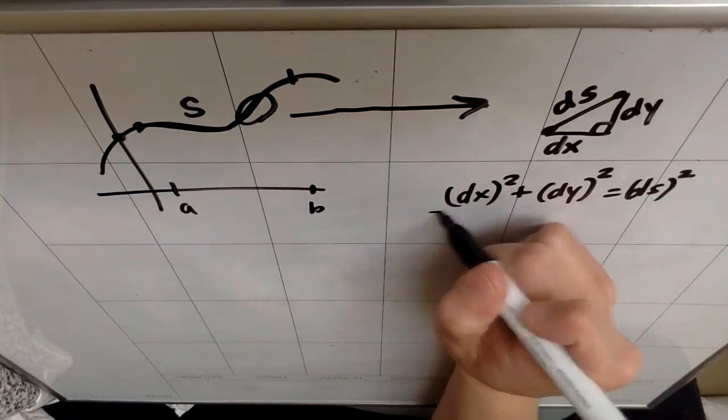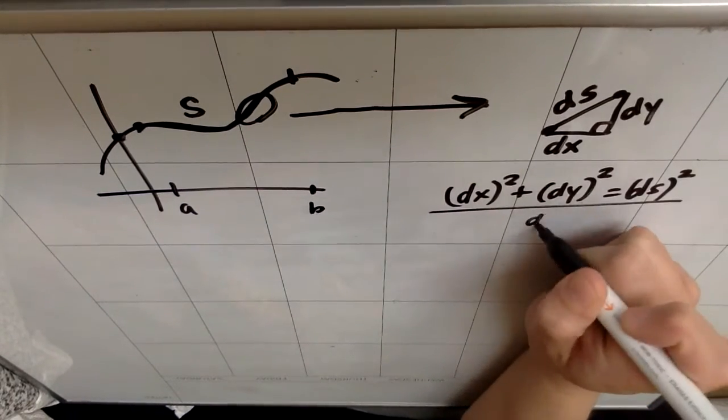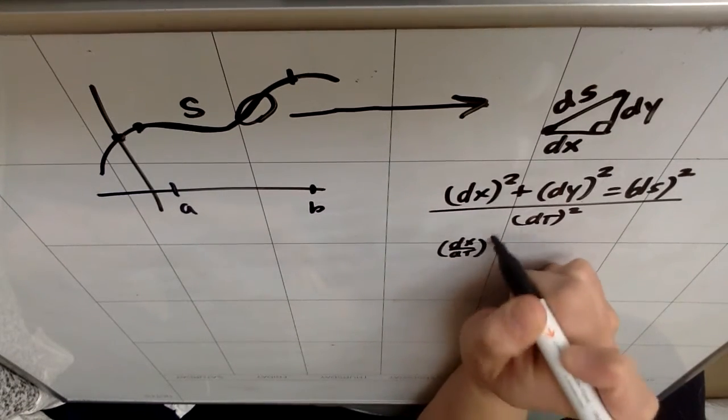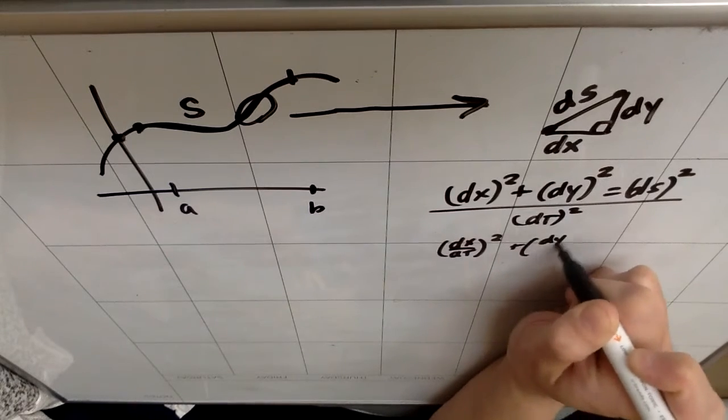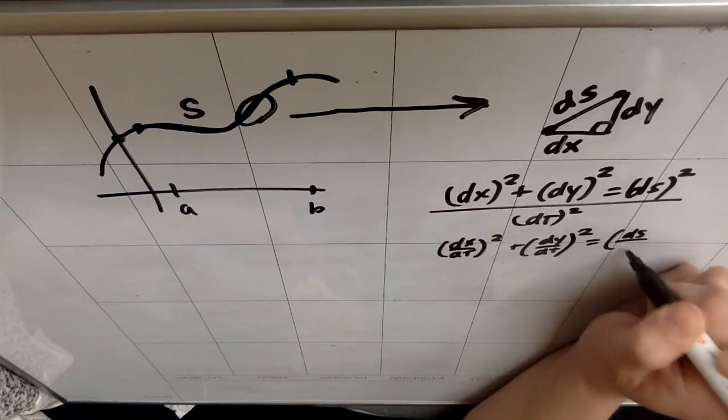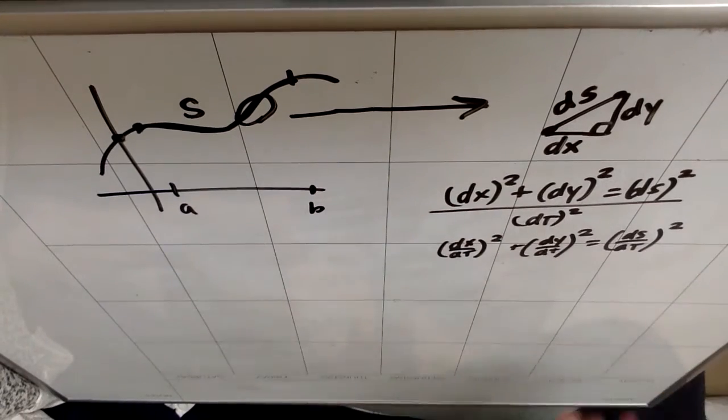I could divide this whole equation by (dt)², and what I would get is (dx/dt)² plus (dy/dt)² equals (ds/dt)².